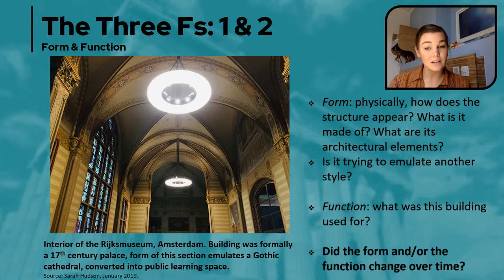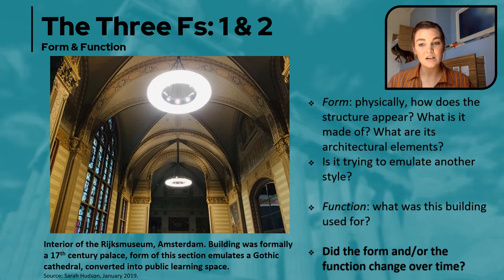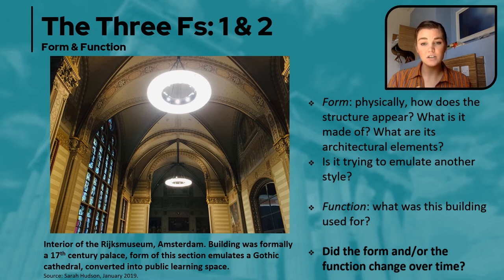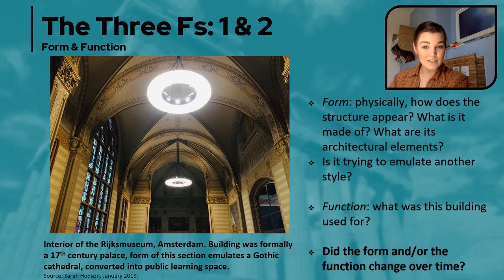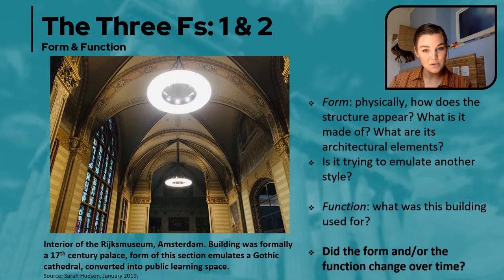Another good example I like to use, which is a little bit simpler, is from my hometown in Canada — there is an old church that was converted into a house. Form-wise, from the outside, most people would assume it's a church: it still has the pointed arches, the stained glass, the bell tower, and even some of the pews inside, but the space is now used as a domestic space. Does that mean its form has changed along with its function, or could you still argue that its form is ecclesiastical, not domestic? Just something to think about. Form and function kind of play into each other, whereas feeling — our next F — sits somewhat apart on its own.